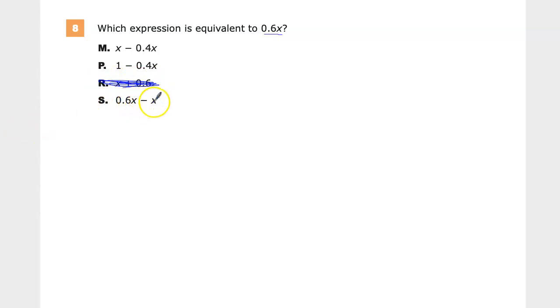0.6x minus x. Well let's think about what the x means. If it's just x there's one of them right? So I would do 0.6 minus one whole and this isn't great. This is going to end up being in the negatives. Because if I take one away from 0.6 I get 0.6 minus 0.6 gives me zero and then I still have negative 0.4 to go. So this thing would give me negative 0.4x and that's not what we're looking for.